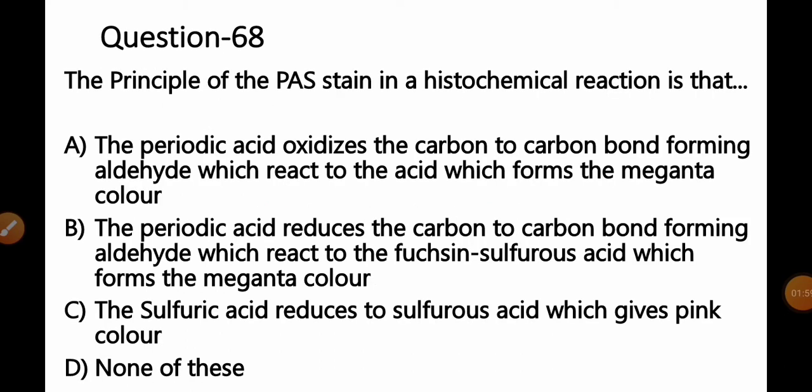Question number 68: The principle of PAS stain — that is Periodic Acid-Schiff stain — in a histochemical reaction is that: Option A: the periodic acid oxidizes the carbon-to-carbon bond forming aldehyde, which reacts with the acid to form a magenta color; B: the periodic acid reduces the carbon-to-carbon bond forming aldehyde, which reacts with fuchsin sulfurous acid, forming magenta color; C: the sulfuric acid reduces to sulfurous acid giving pink color; D: none of these.